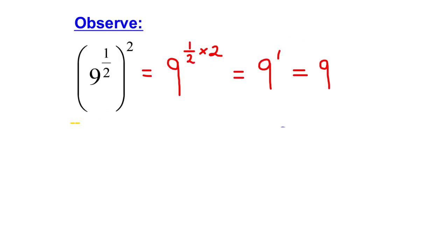Now, just watch what I'm doing here. Here I have 9 to the exponent 1 over 2. This is a rational exponent. If I were to square this power, this is now a power of a power. And I know my exponent laws. If I have a power of a power, I can simplify that by multiplying the exponents. So, when I do 1 over 2 times 2, it's 1. So, this simplifies to 9 to the exponent 1, which is 9.